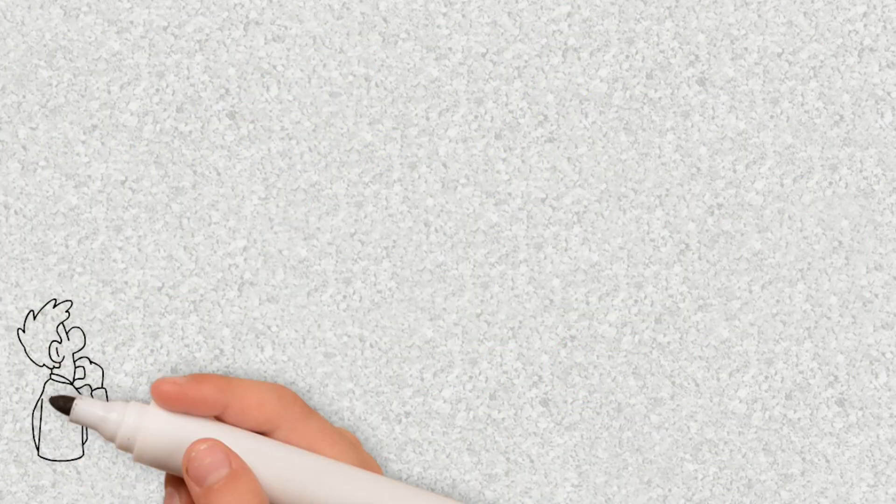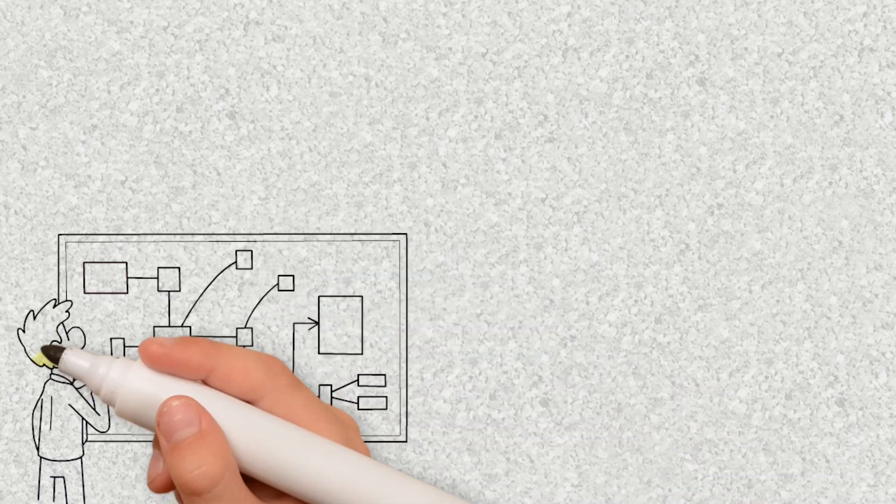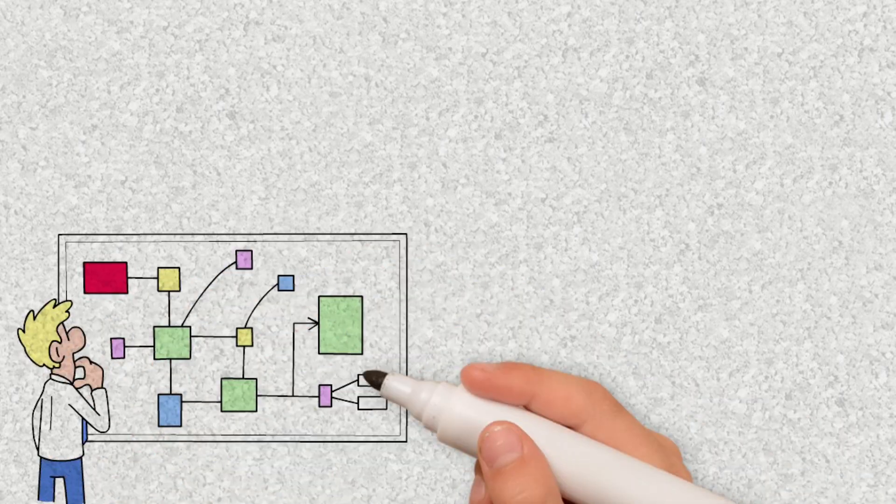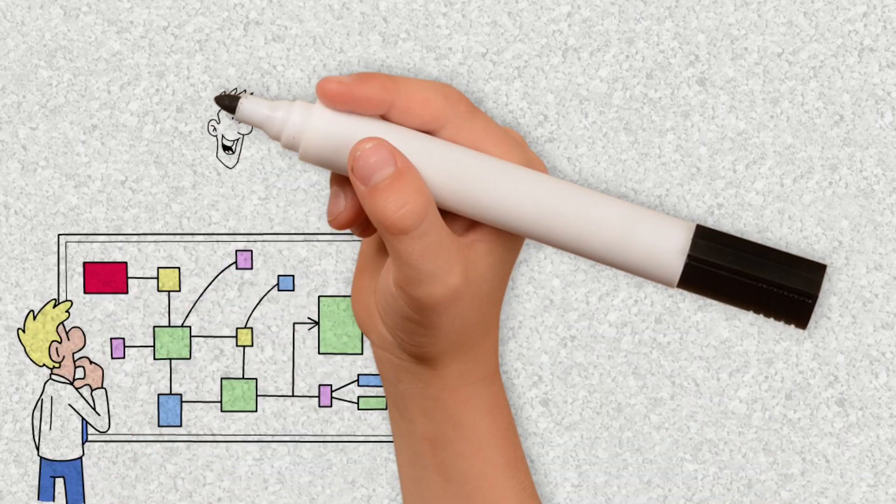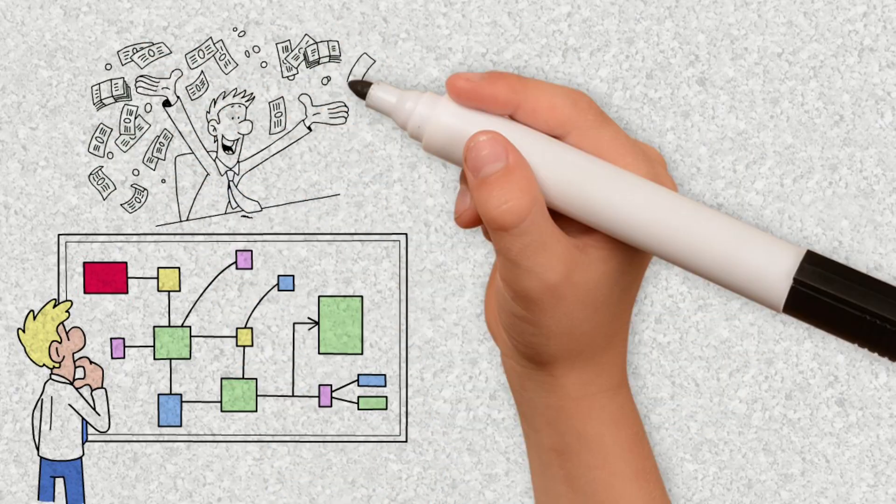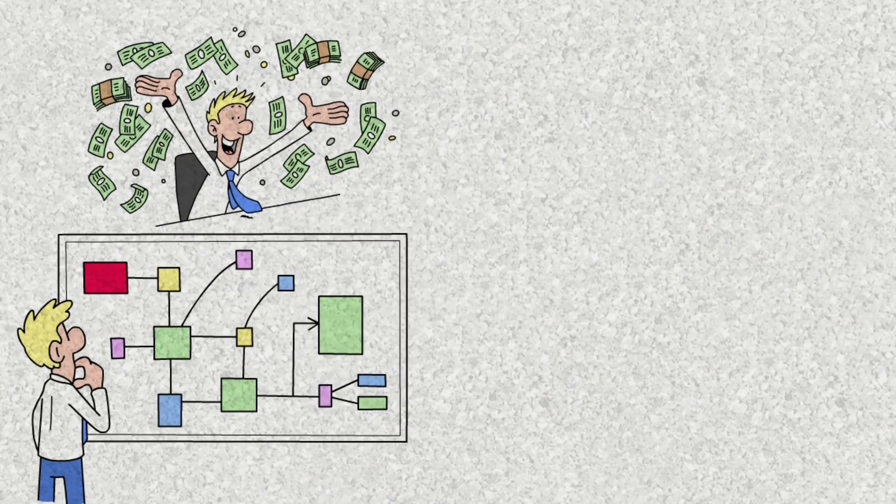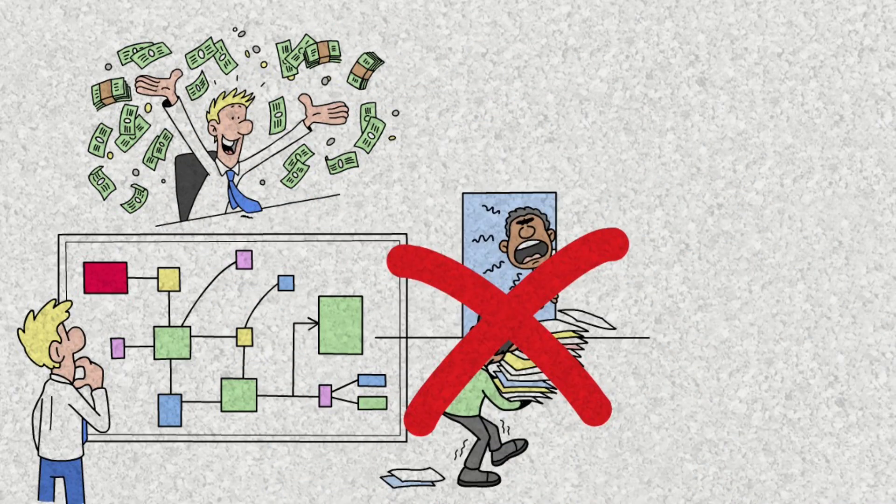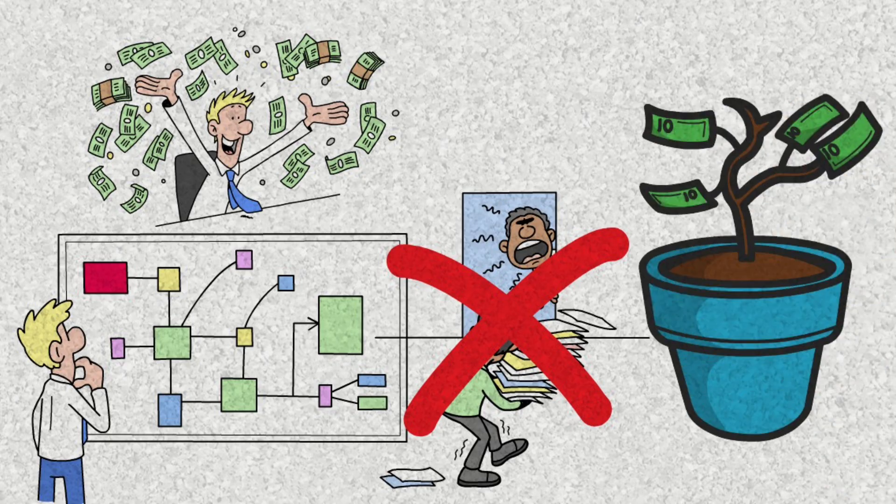If you start today and apply the rules strategically, you can reach the point where profits exceed your contributions much sooner than you think. And when that happens, it feels like the game has turned. You no longer depend solely on your work to live. Your wealth is working for you, and that is true independence.